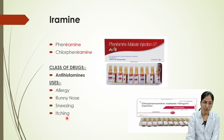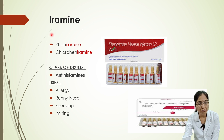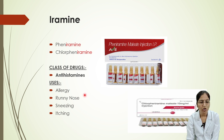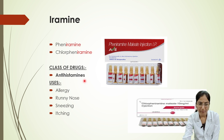Next, we'll look at drugs whose names end with '-iramine'. Examples include pheniramine and chlorpheniramine — you can observe the ending '-iramine'. This group belongs to the class of antihistamines, and they are prescribed for allergy, runny nose, sneezing, and itching.